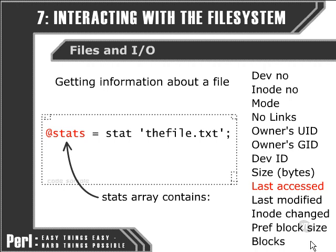The last accessed and modified statistics, and the last time the inode of the file was changed — these three are all listed in terms of the number of seconds since the beginning of the Unix epoch in 1970, January the 1st. They represent the time since last accessed as a Unix timestamp. The last two elements apply to BSD-based file systems: the preferred block size and the actual size of blocks the file is taking up on the file system.